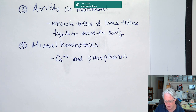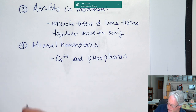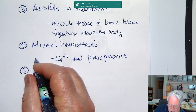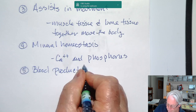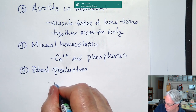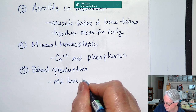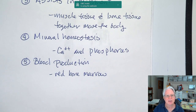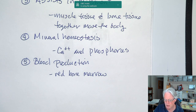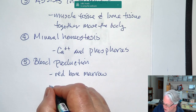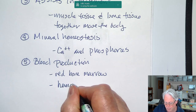Number five is blood cell production. This happens in red bone marrow, which is the location where all cells of your blood are produced — white blood cells, red blood cells, and platelets. The stem cells for that production are found in red bone marrow, and the process is referred to as hemopoiesis, which describes the production of new blood cells.